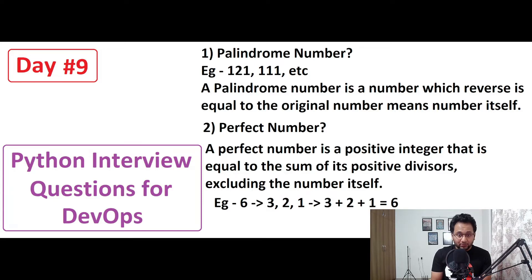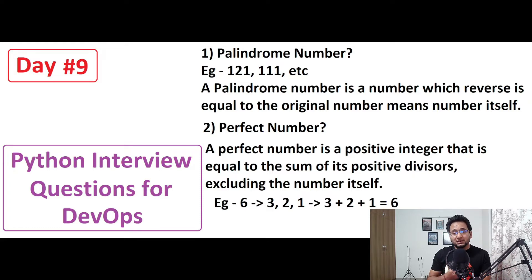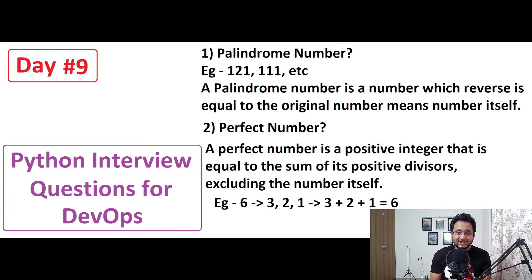We need to find out and write a program for a perfect number — this was one of the questions asked to me as well, so you can prepare this program. A perfect number is a positive integer that is equal to the sum of its positive divisors, excluding the number itself. For example, six: its divisors are 1, 2, and 3, and 1 + 2 + 3 = 6. Another example is 28, which is also a perfect number.